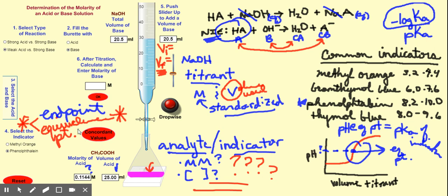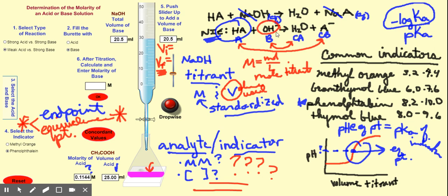Since this is a standardized solution, I know the molarity and — now that I've collected data — I know the volume. From those two pieces of information I can find moles, because molarity equals moles over liters. Taking the molarity times the volume in liters gives me moles of the titrant. So I've now found moles of the base (OH⁻).